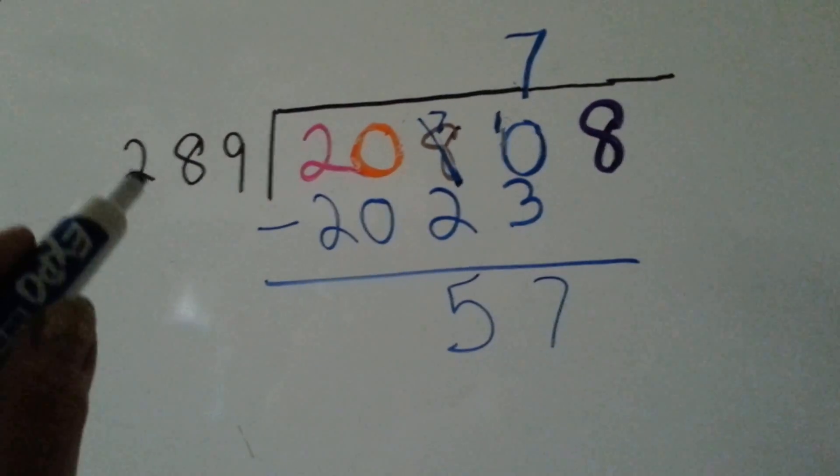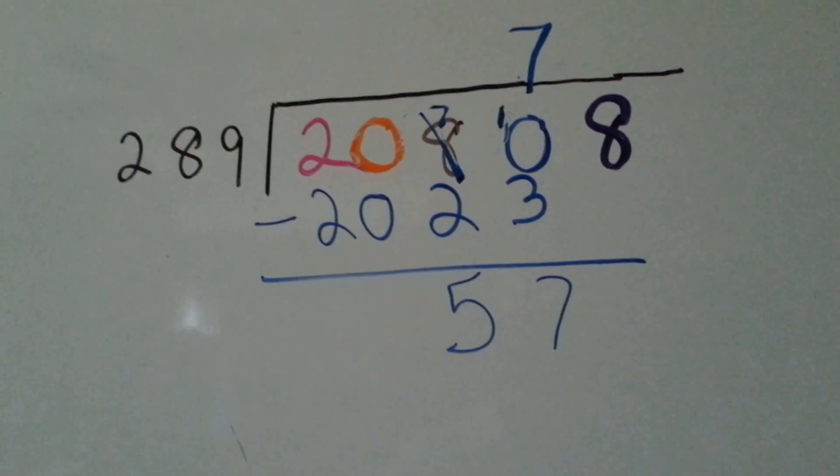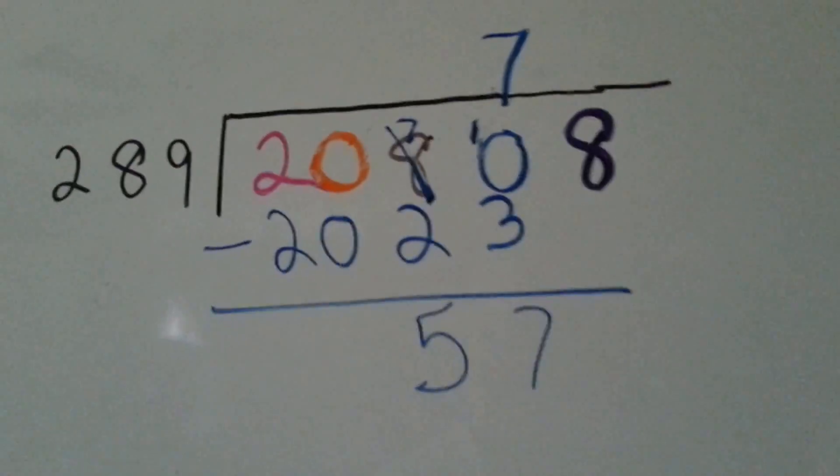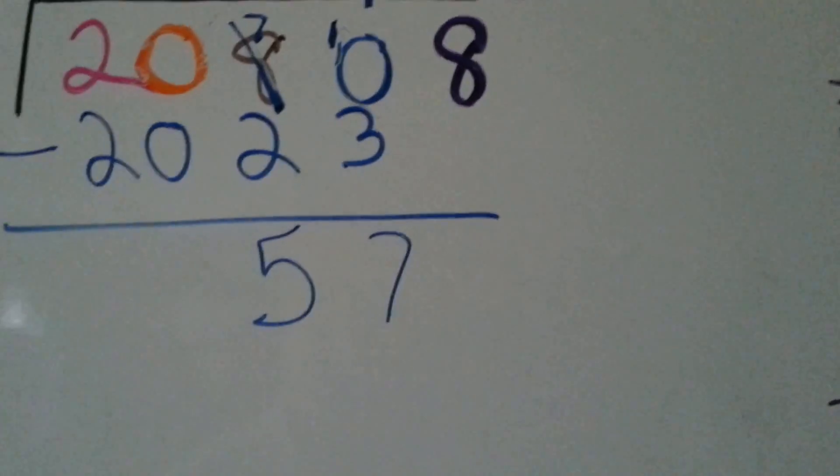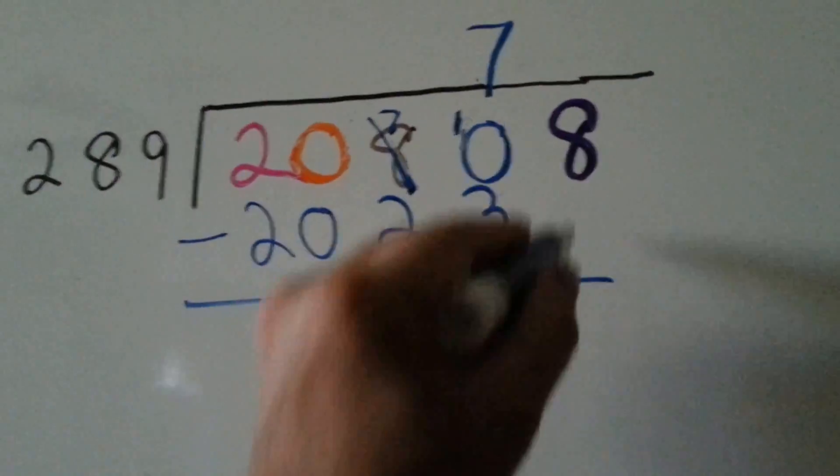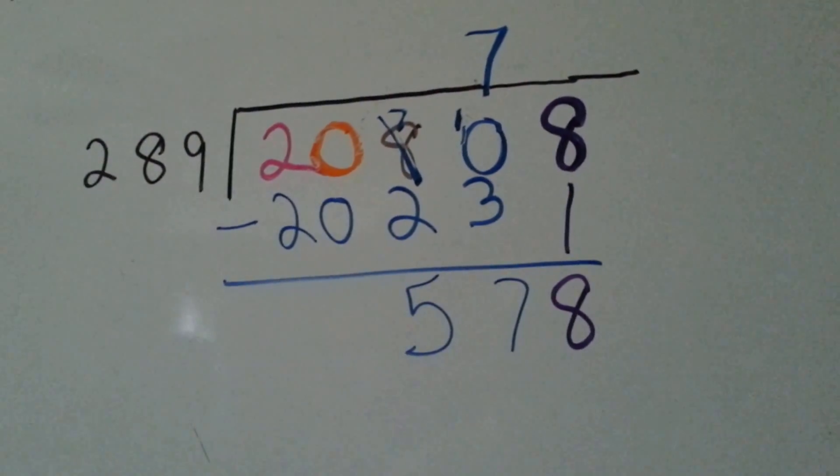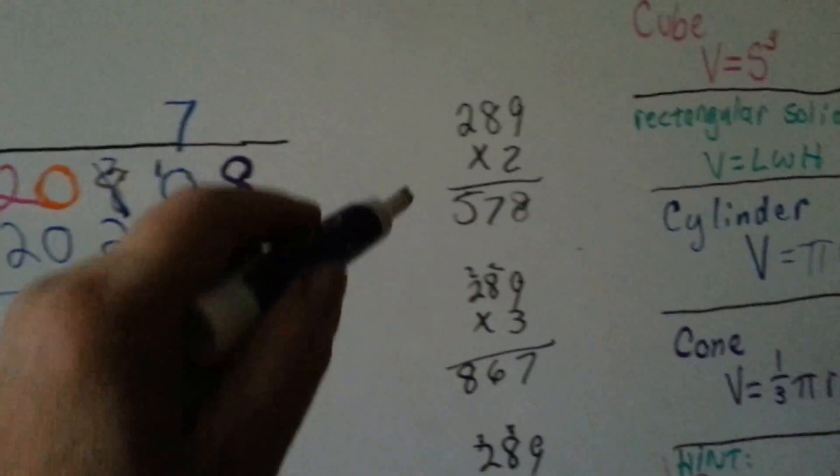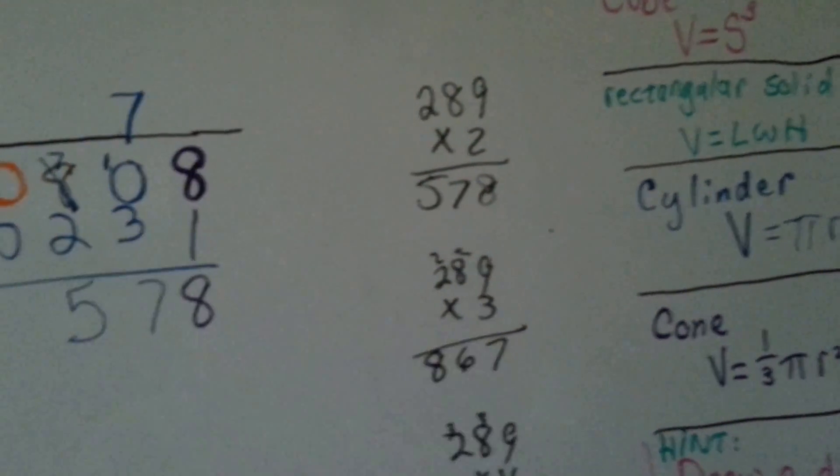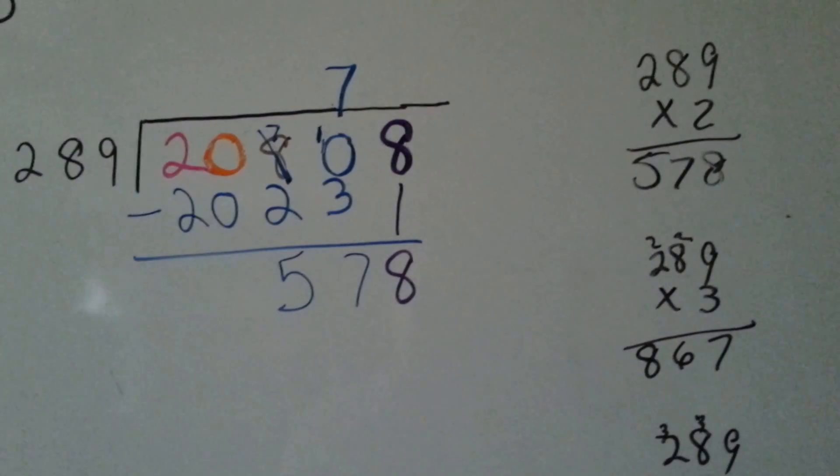Now we've got, can 289 fit into 57? No, it can't. Can it fit into, let's see, purple eight's turn to come down. Can it fit into 578? Well, look, 2 times 289 is 578, so it fits in 2 times.